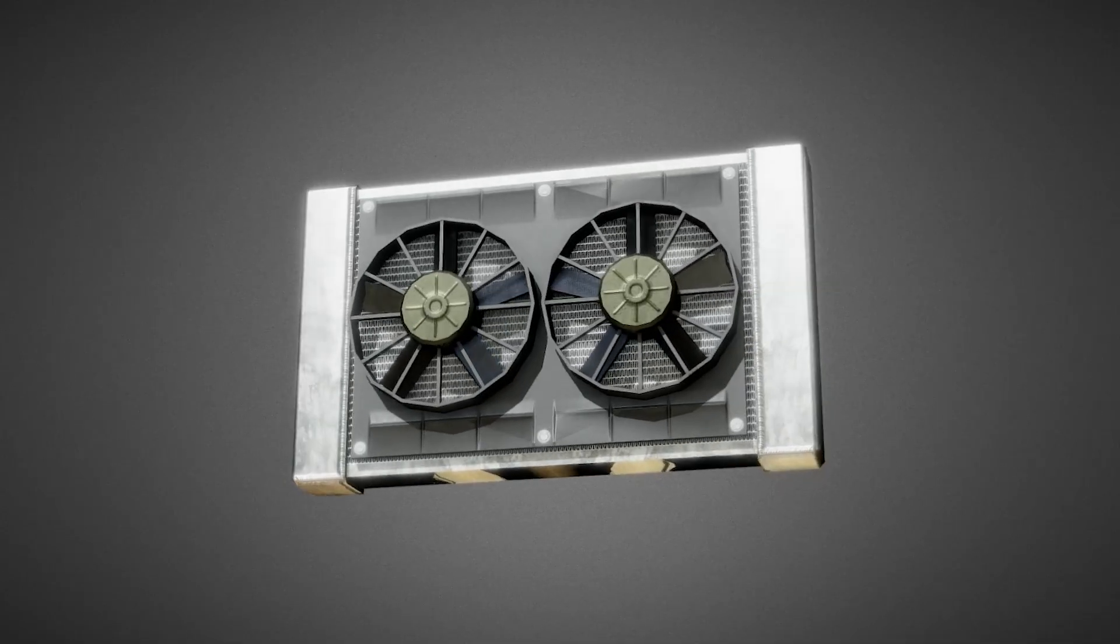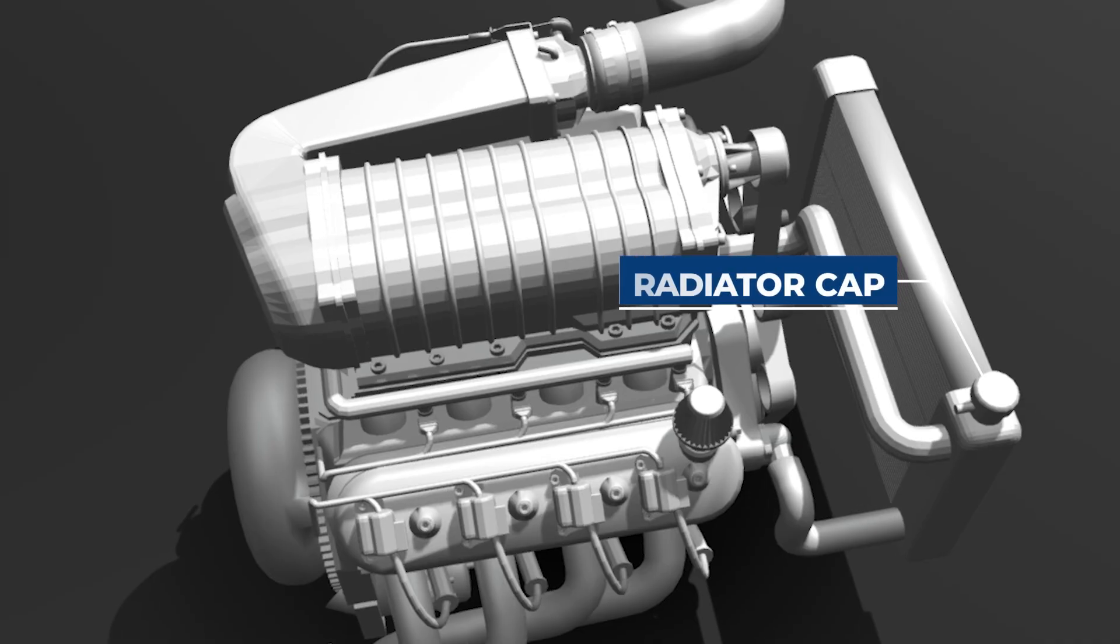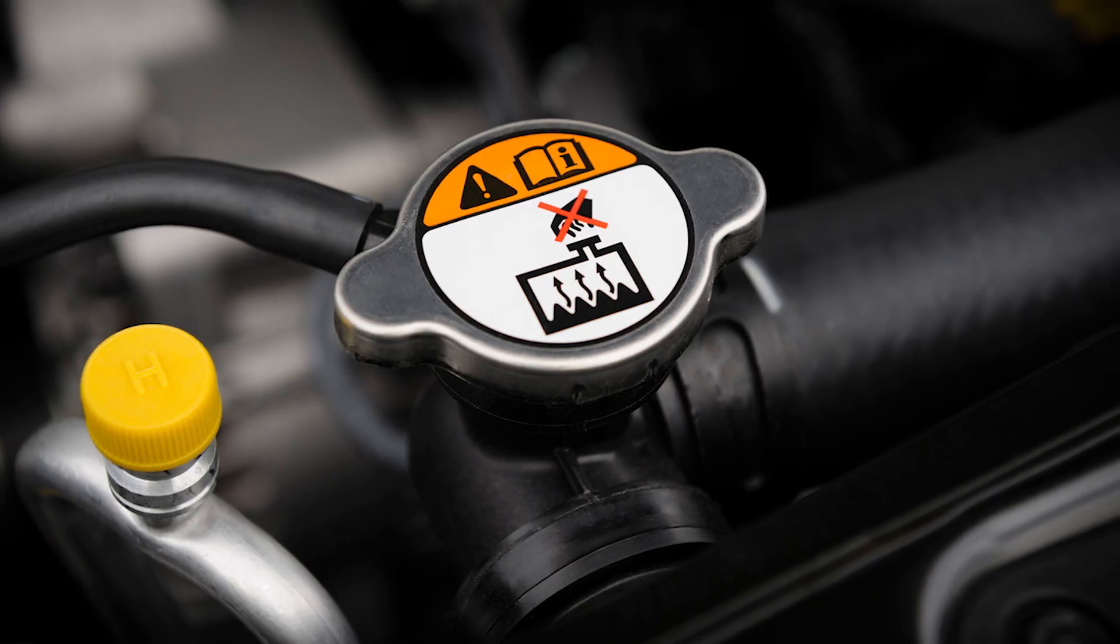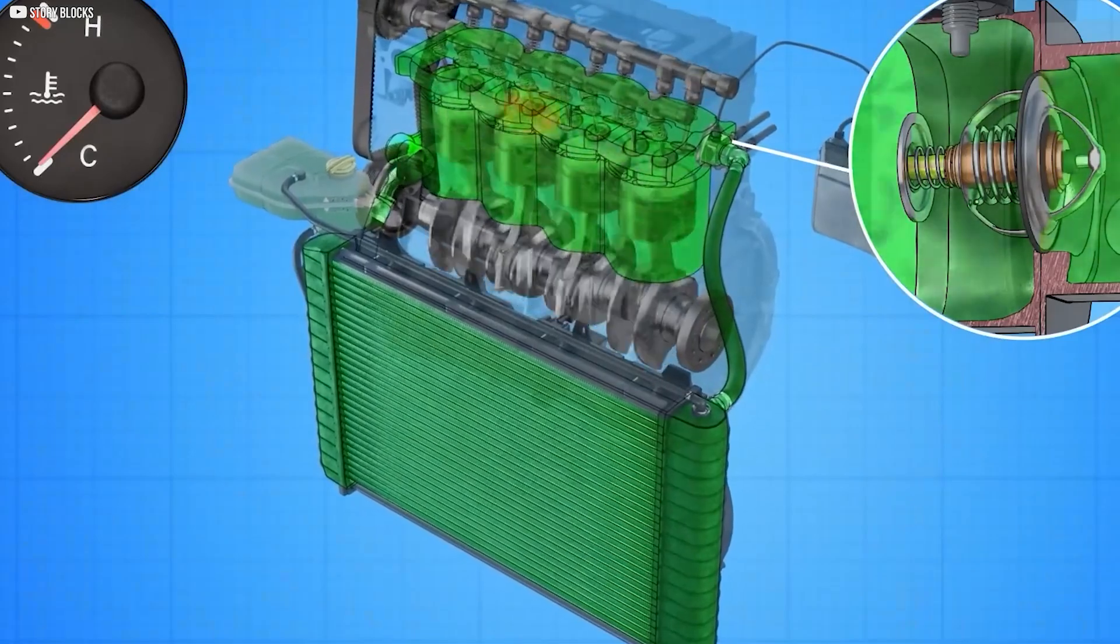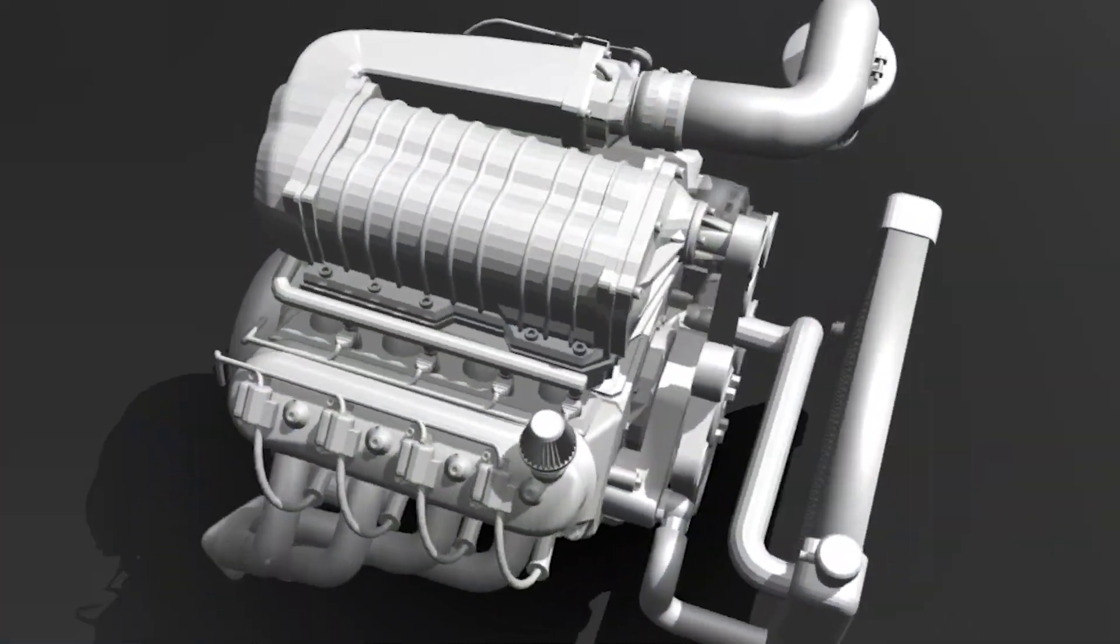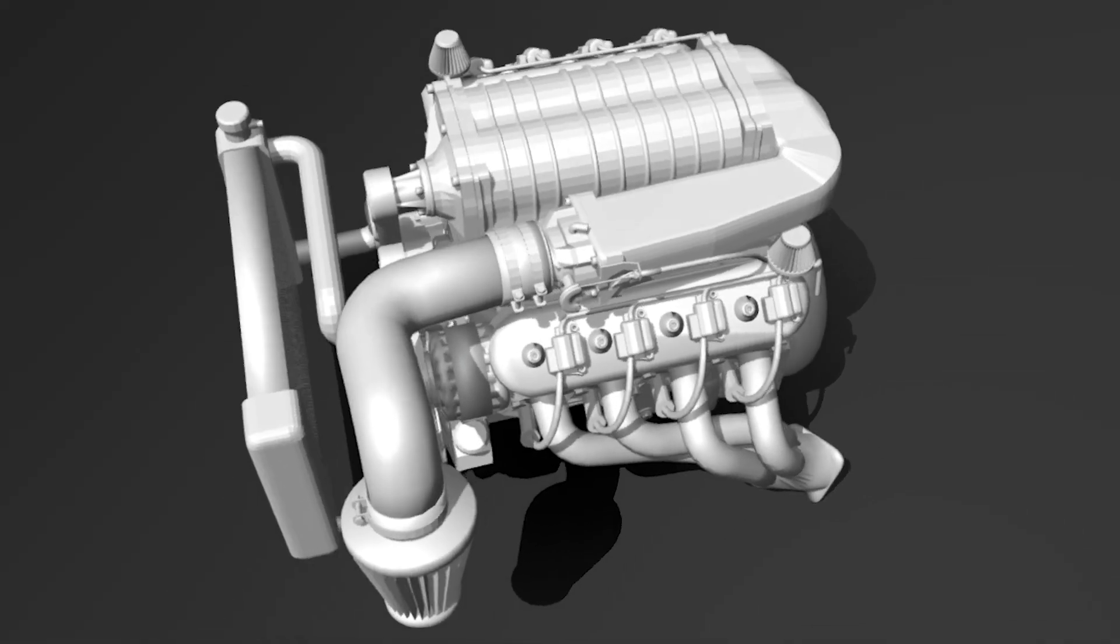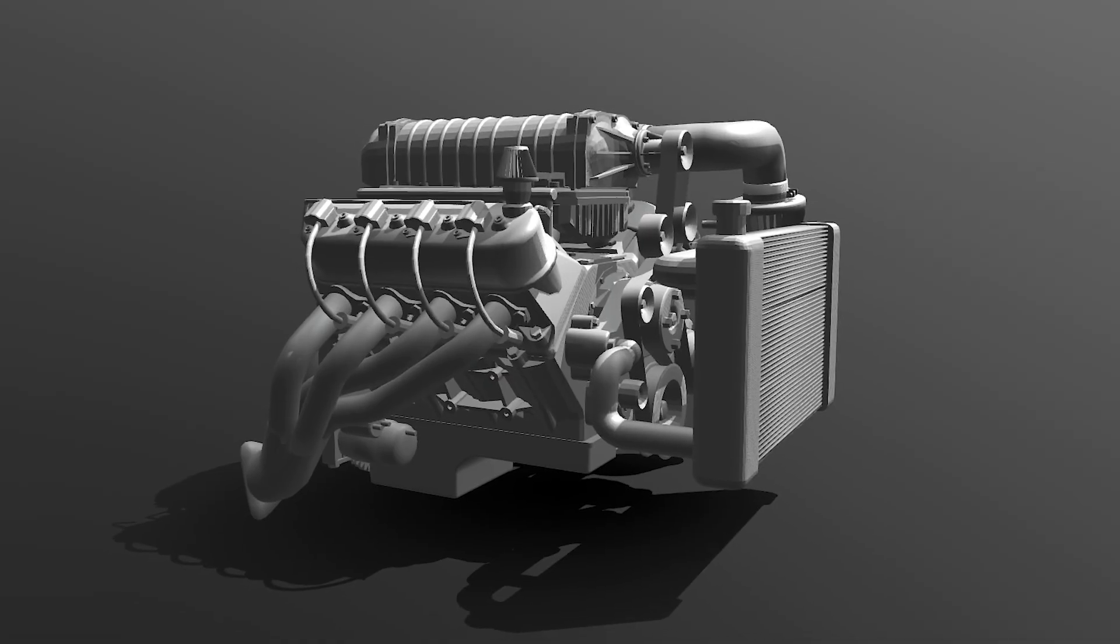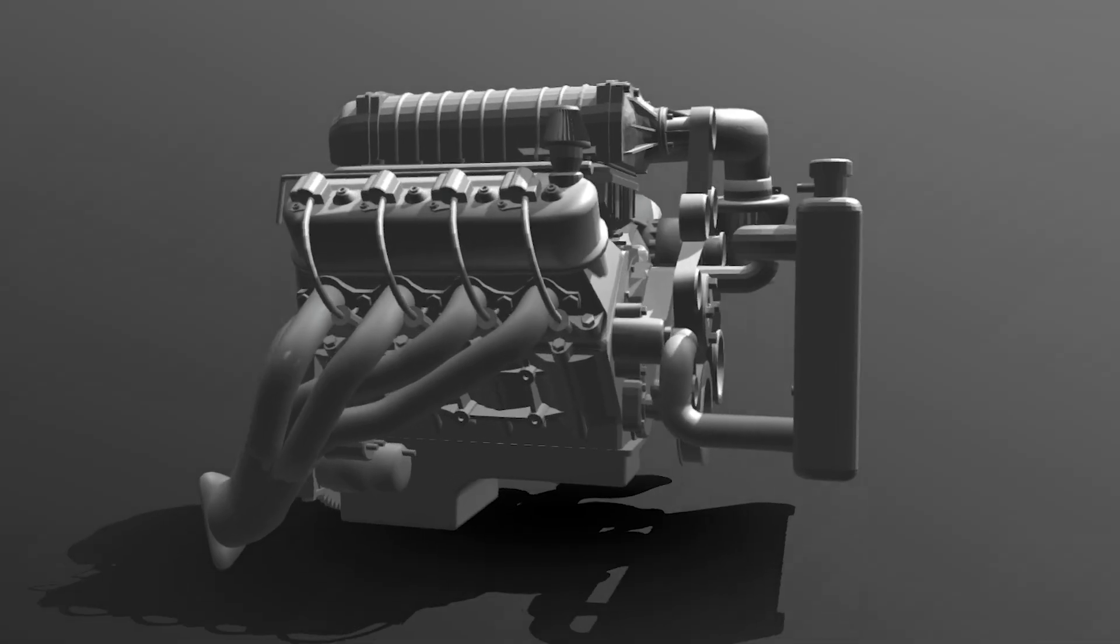Air rushes past these fins, either from vehicle motion or from the cooling fan, carrying the heat away into the atmosphere. At the top sits the radiator cap. It may look simple, but it's a safety device with two valves inside. Together, the hose, radiator, and cap form the great circuit of cooling.